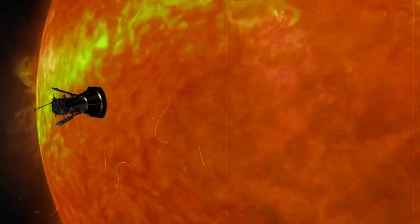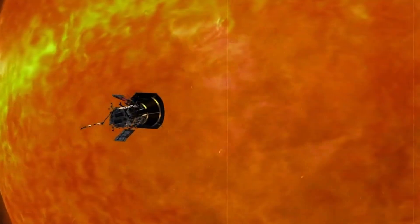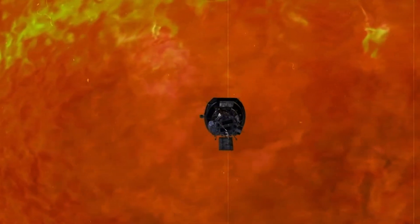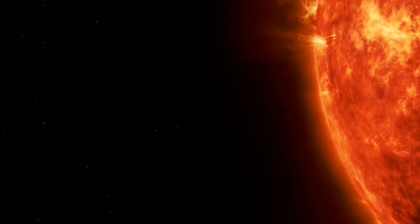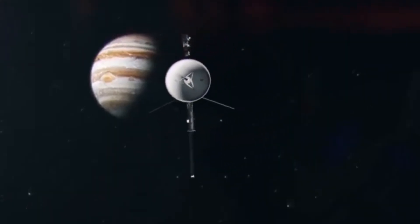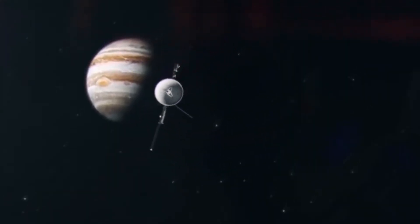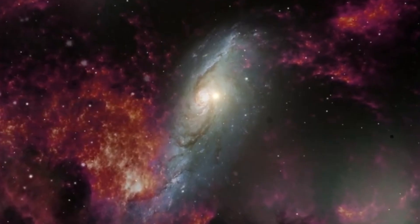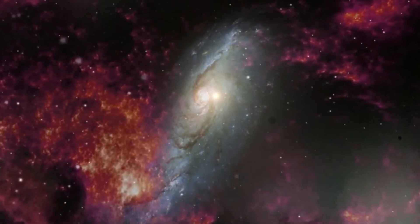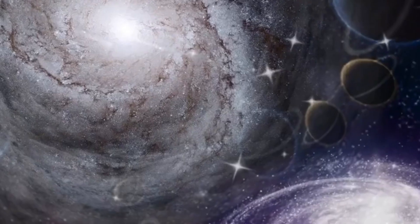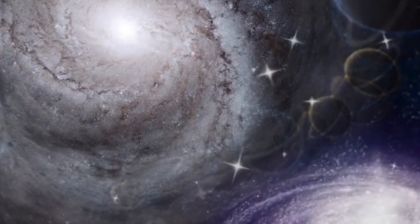While Eugene Parker died in 2022 at the age of 94, he was the first person to witness the launch of a probe named after him. In fact, Parker's solar probe had already set out into the vastness of space on August 12th, 2018. But how did it come to be on its way to the Sun of all things? And why hasn't it burned up already?